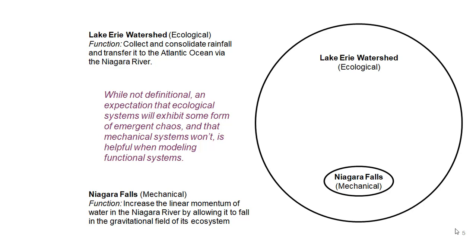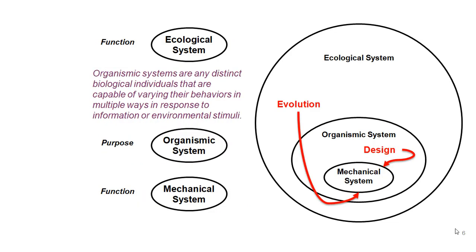While not definitional in the purest sense, we expect ecological systems to exhibit some form of chaos that manufactured systems won't. We can typically tell the difference between the two by looking at the scale of complexity or chaos that emerges from their operation, though it's cyclic and depends on what you're treating as the system. Most engineering projects touch on ecological or mechanical systems in some way.